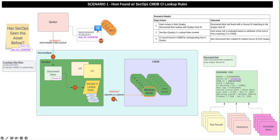In step two, a lookup occurs using the SecOps CI lookup rules. Each active rule is evaluated based on the attributes of the host to find a matching CI in the CMDB. The rules are executed in a specified order, and when a rule returns a single CI, that CI is identified as the match and other rules are skipped. In step three, a CI record was found in the CMDB. After a successful lookup, a new discovered item is created using the host ID as the source ID. Subsequent ingestions of this host will complete at step one with a discovered item lookup, no longer requiring the SecOps CI lookup rules to run.